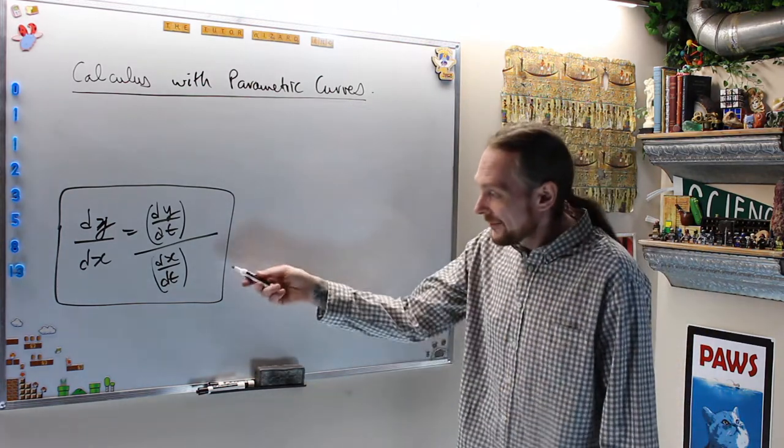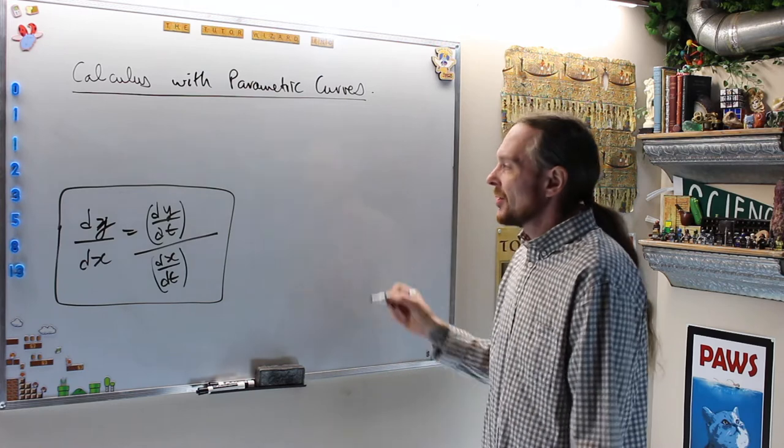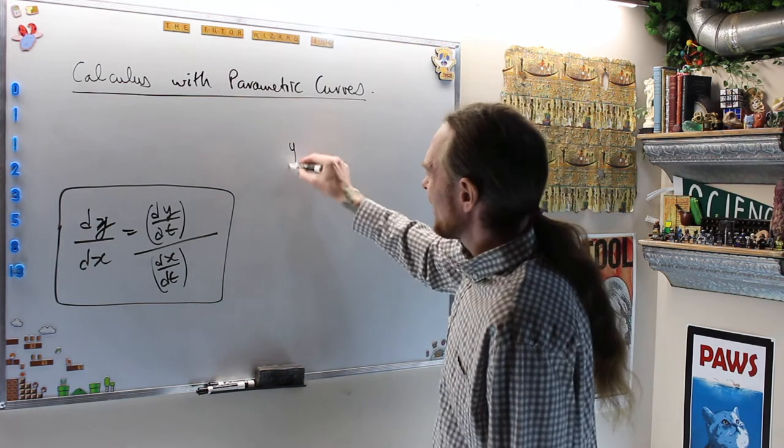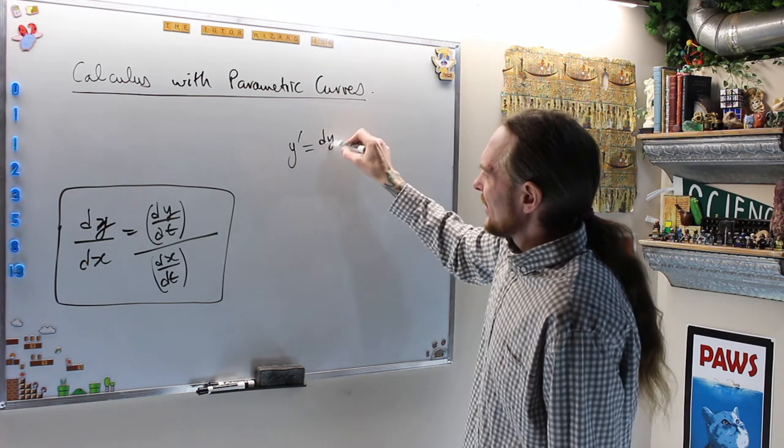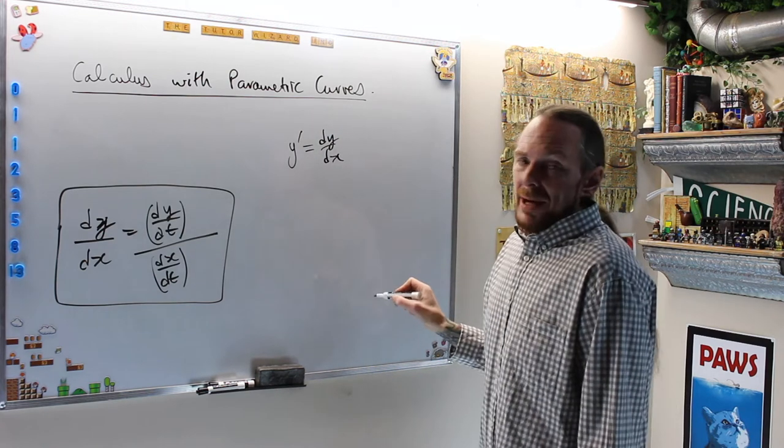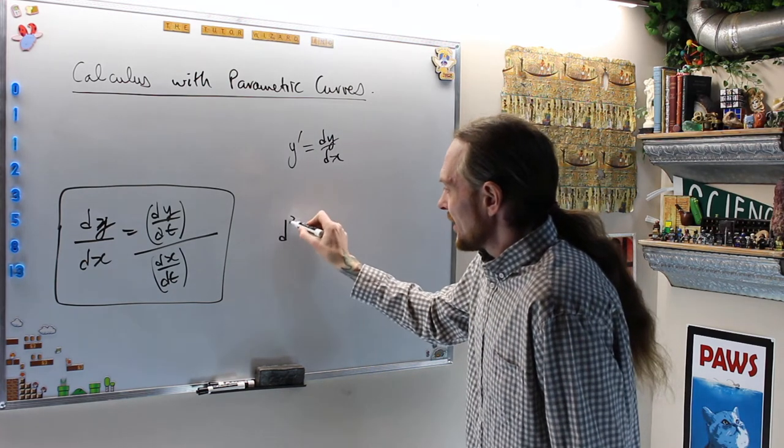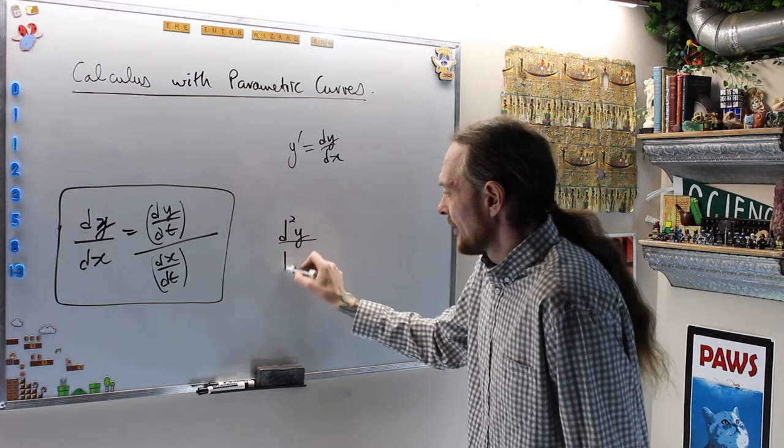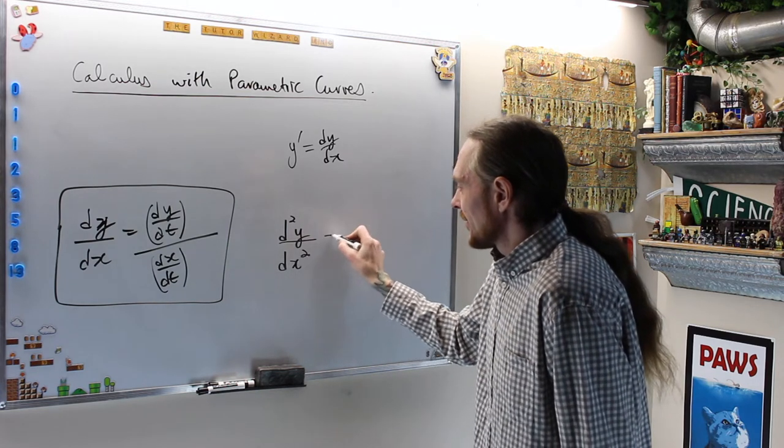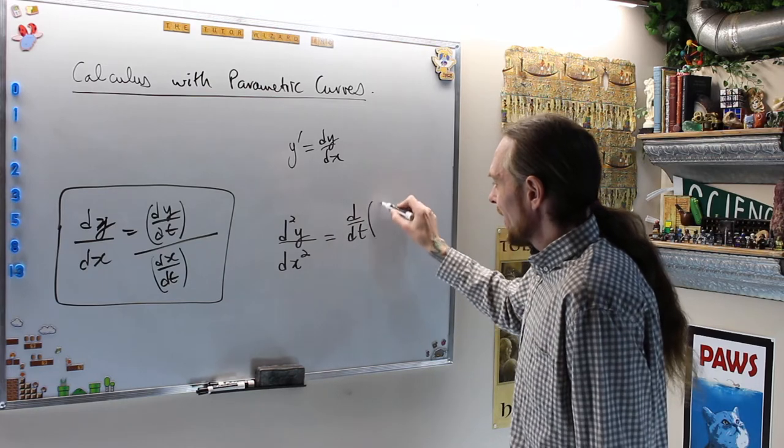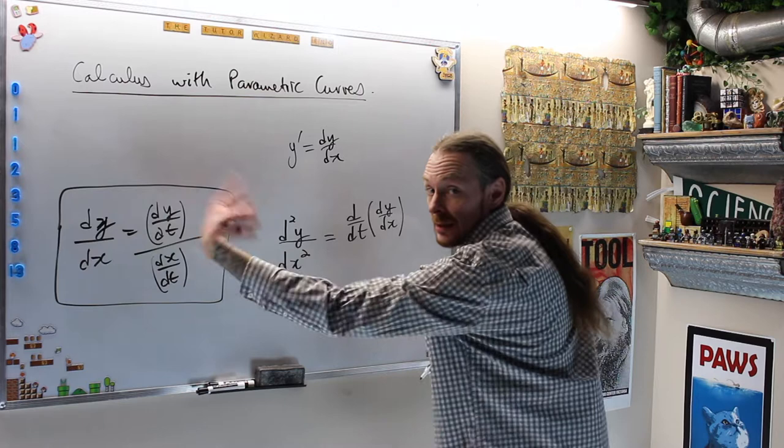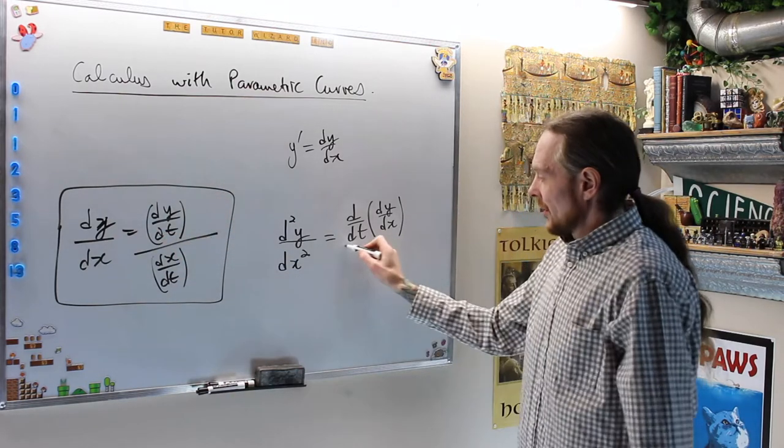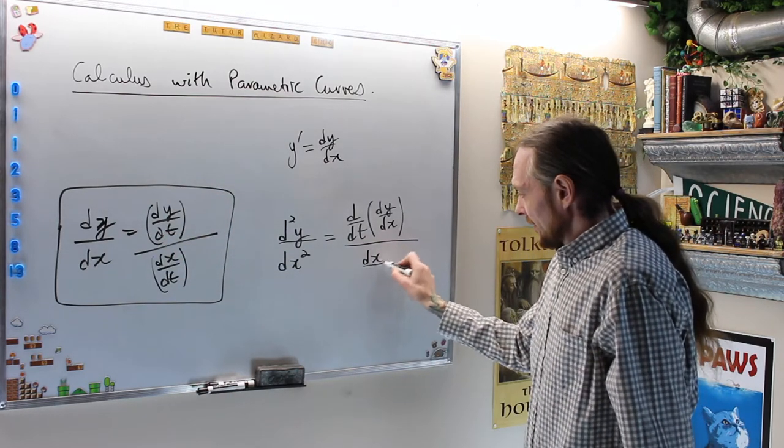For this one, this is the first derivative. For the second derivative, basically I won't derive it, but what a lot of the books like to do is try to make this simplified and write y prime equals dy/dx. But basically what we're going to do is d²y/dx² is going to be the derivative with respect to t of dy/dx, this guy, over dx/dt.